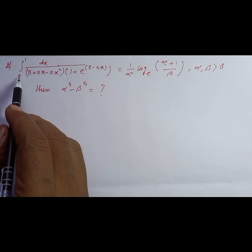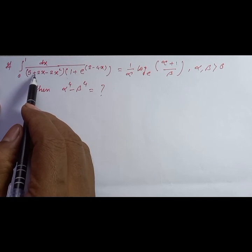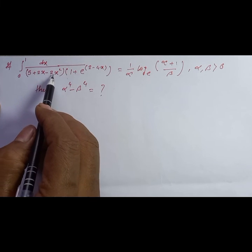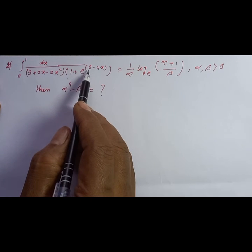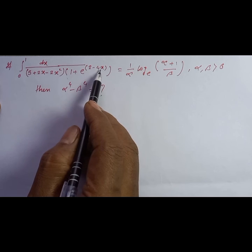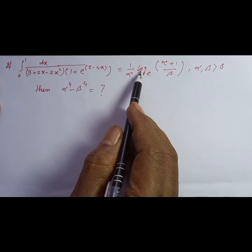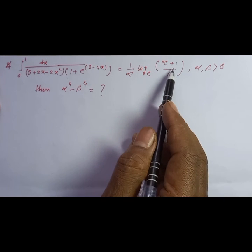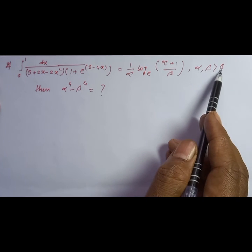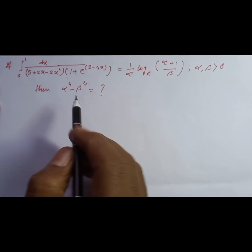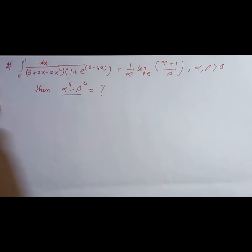If integration from 0 to 1 of dx divided by (5 + 2x - 2x²)(1 + e^(2-4x)) equals (1/α) log(α + 1/β) to the base e, where α, β > 0, then find the value of α⁴ - β⁴.